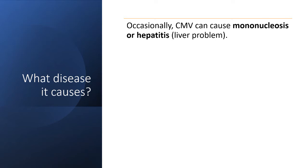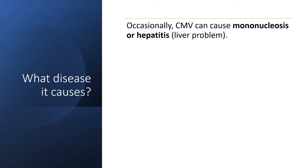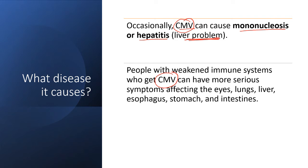Occasionally, CMV can cause mononucleosis or hepatitis, which is a liver problem. These viruses are mostly associated with liver infection and liver diseases — hepatitis leads to inflammation of the liver, then cirrhosis, and ultimately liver failure. People with weakened immune systems who get cytomegalovirus can have more serious symptoms affecting their eyes, lungs, liver, esophagus, stomach, and intestines.